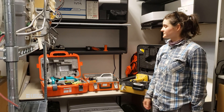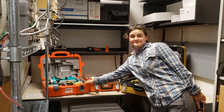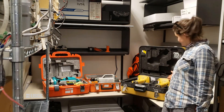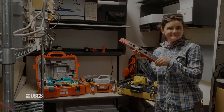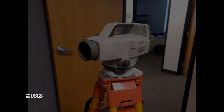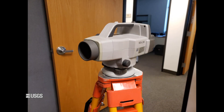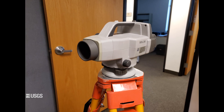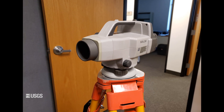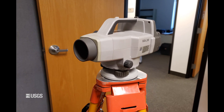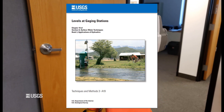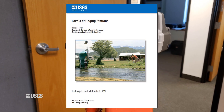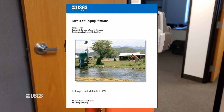You can complete a slope conveyance survey using either a conventional level, total station, RTK or RTN GNSS, or even a simple laser level for very small flows. For this video, I will demonstrate how to do a simple survey with a conventional digital level. Follow the methods outlined in Levels at Gaging Stations, USGS Techniques and Methods Report 3-A19.